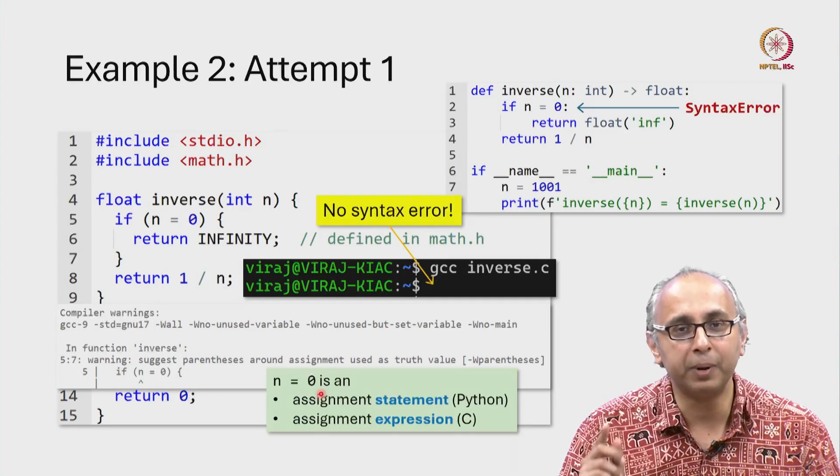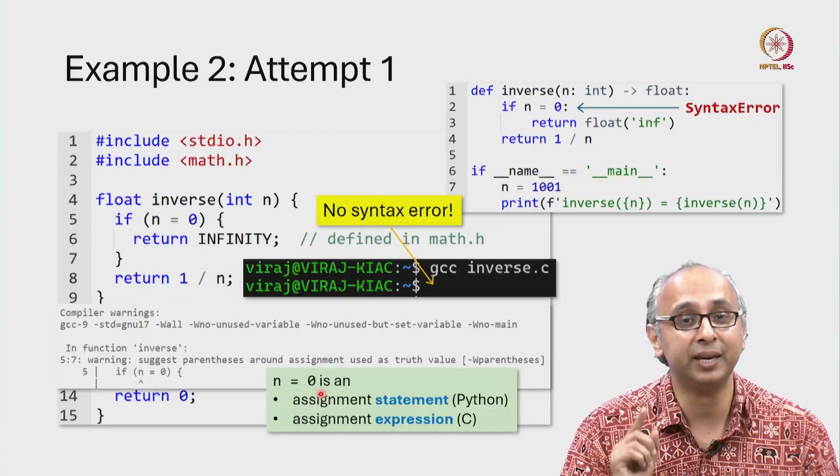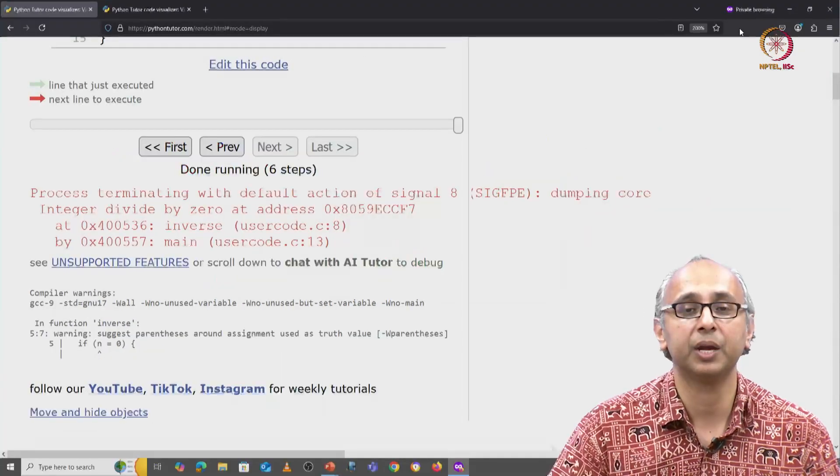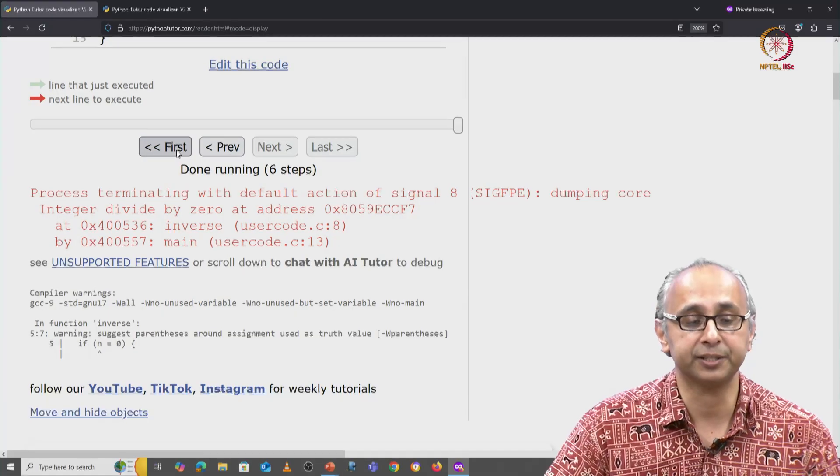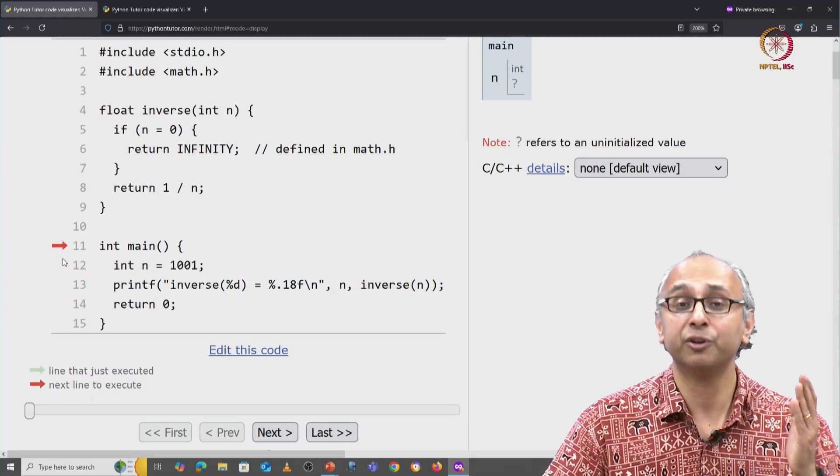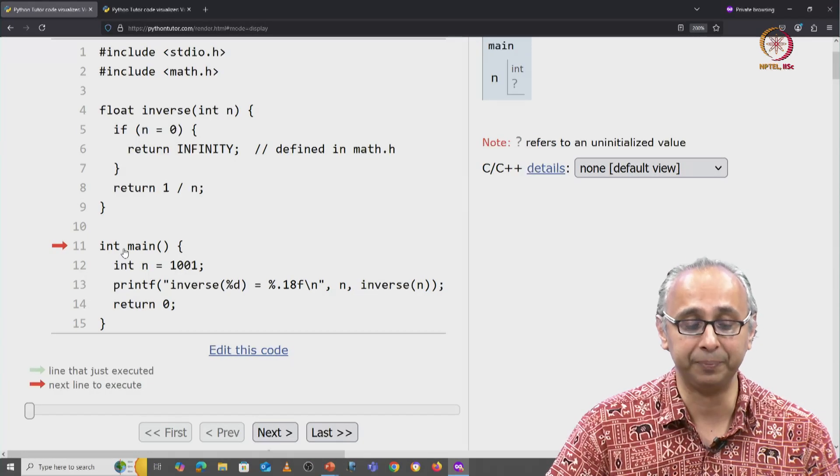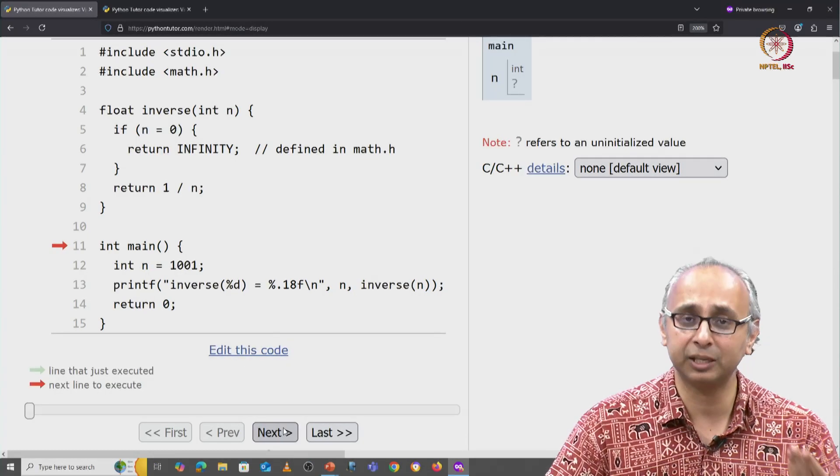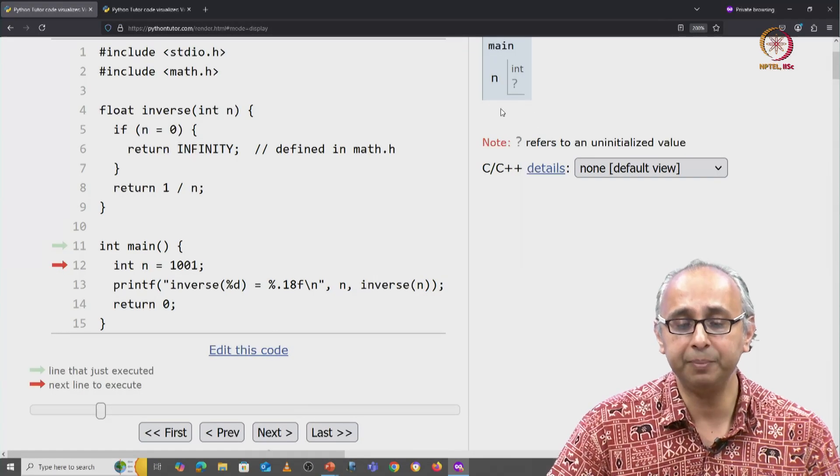What I'm going to do is click on this button first. This will take the execution right to the start. Remember in a C program, execution starts from int main. So let's follow this until we hit the error. We click on next and in main, we have a variable n which is currently uninitialized.